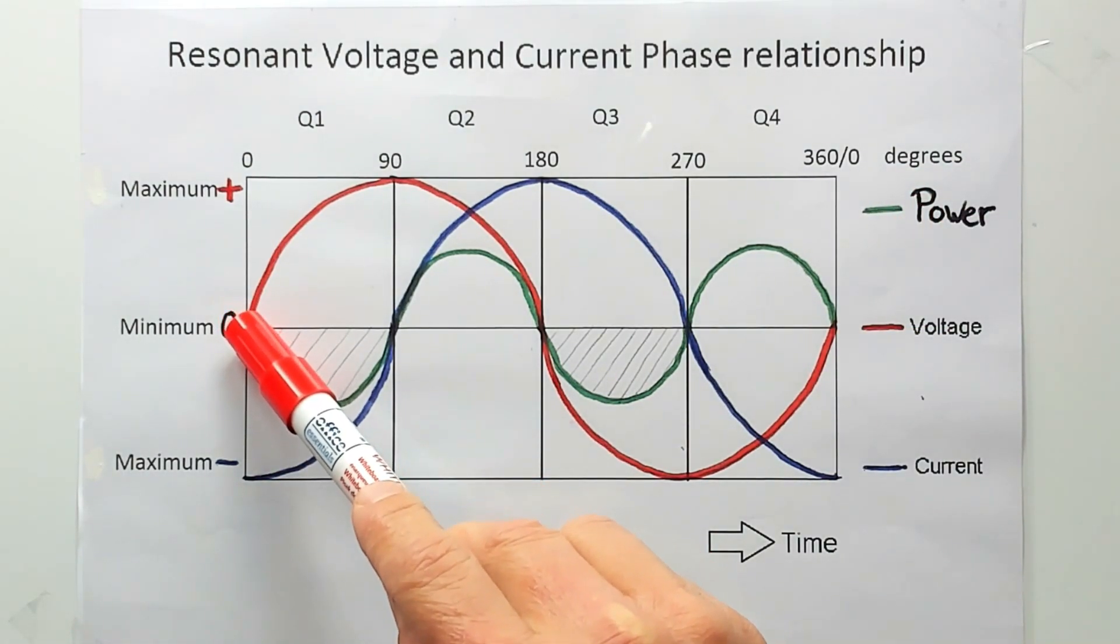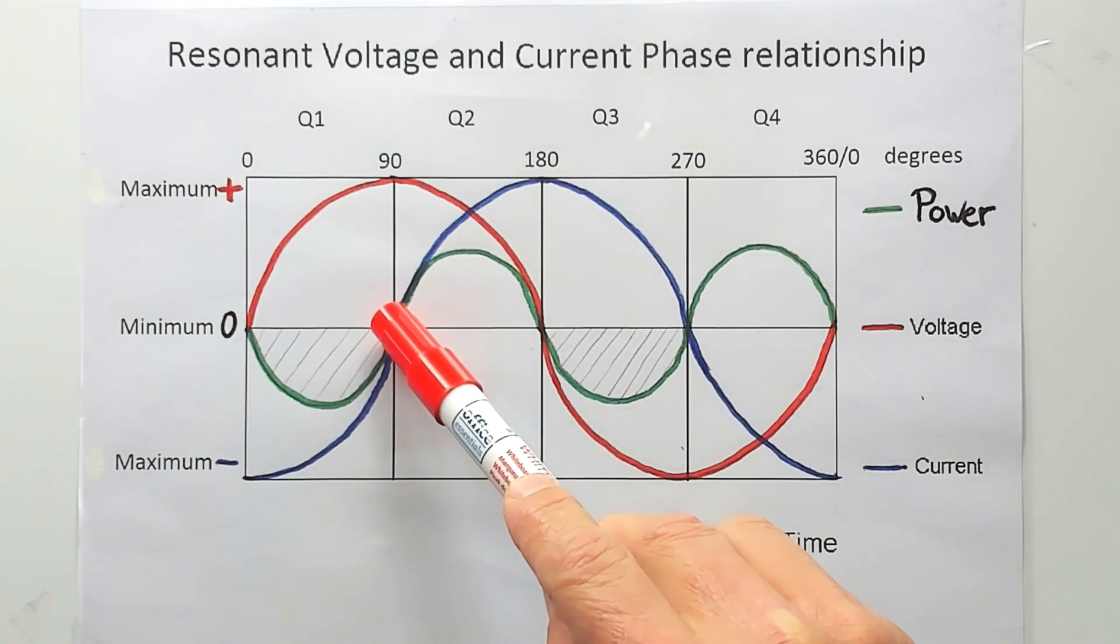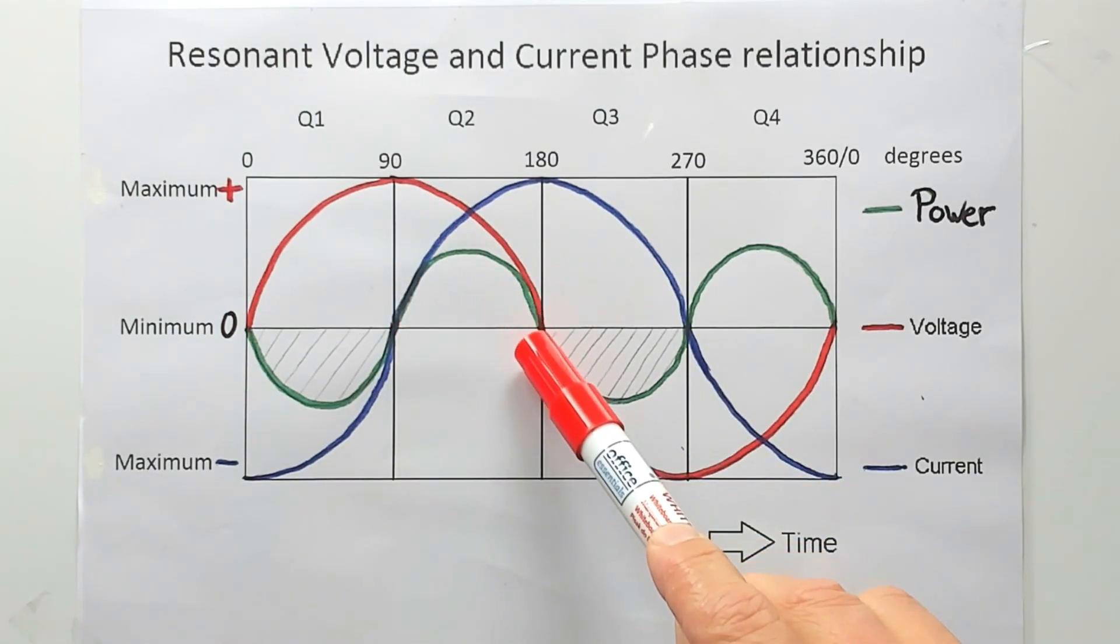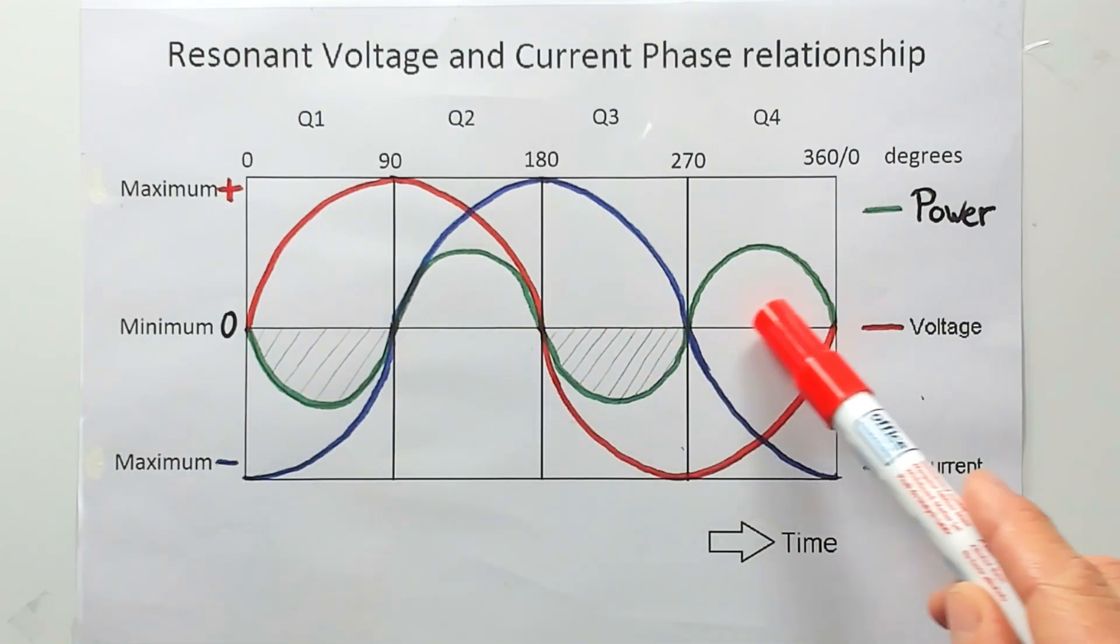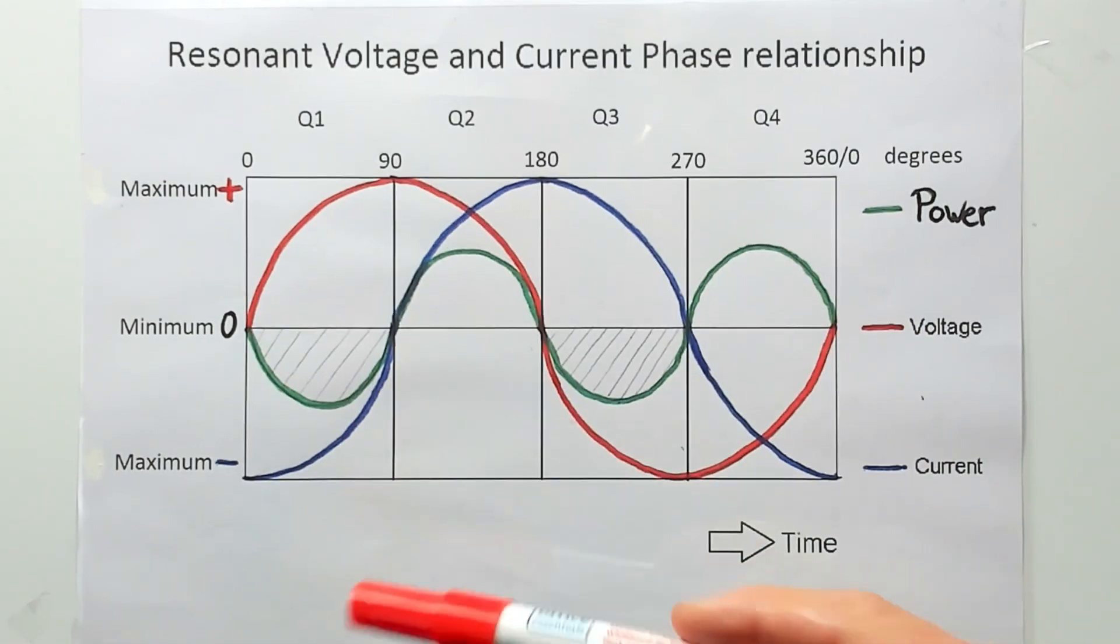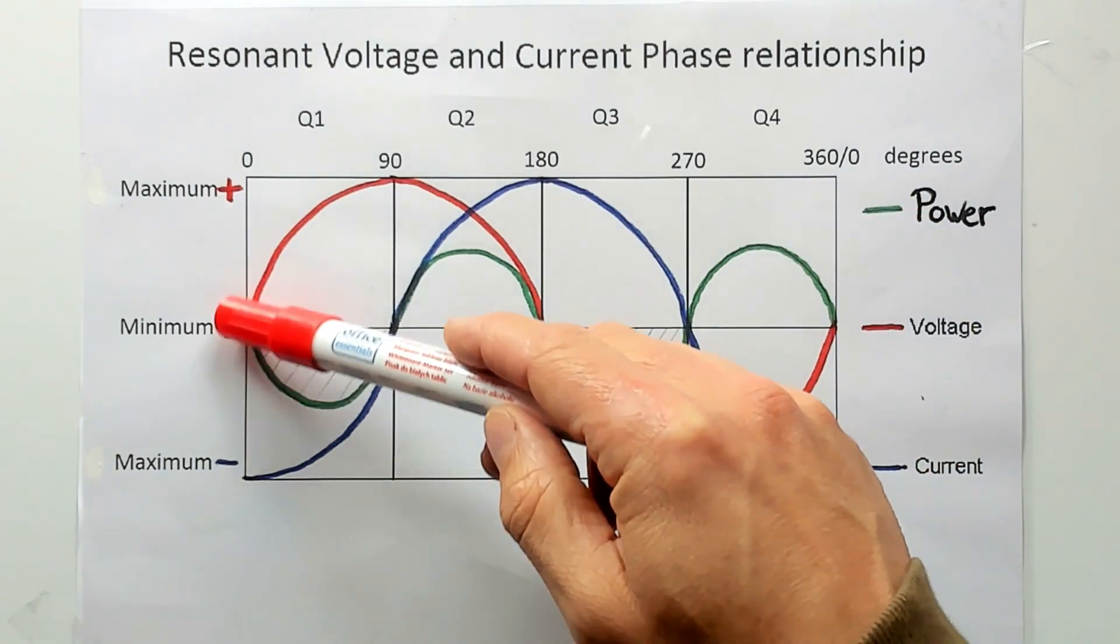A generation cycle and a consumption cycle. A generation and a consumption. Note that the frequency of that power cycle is twice the frequency of the resonant system.